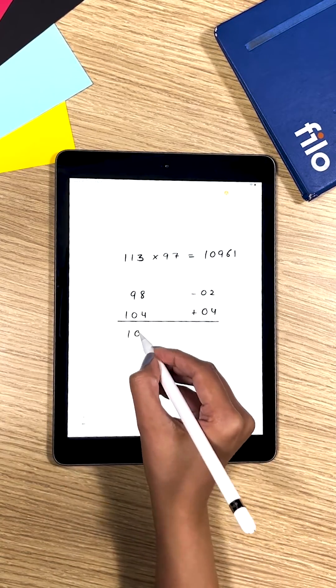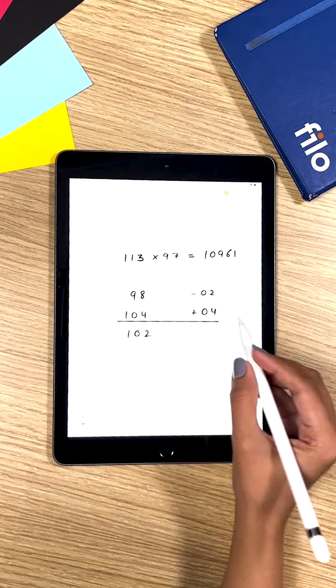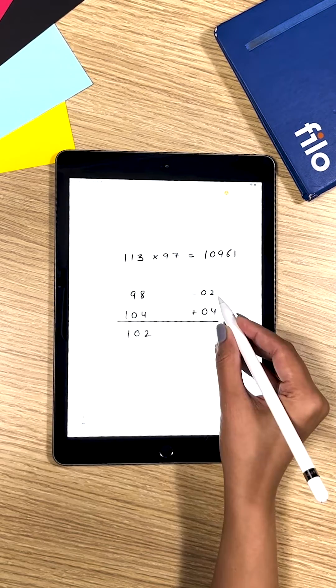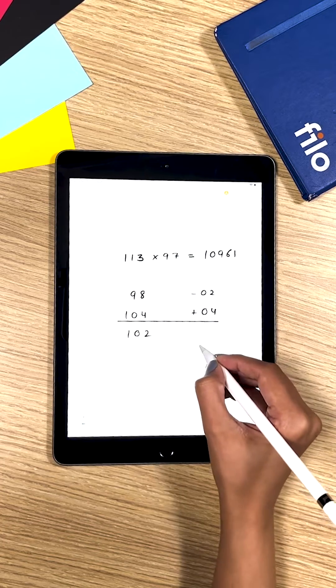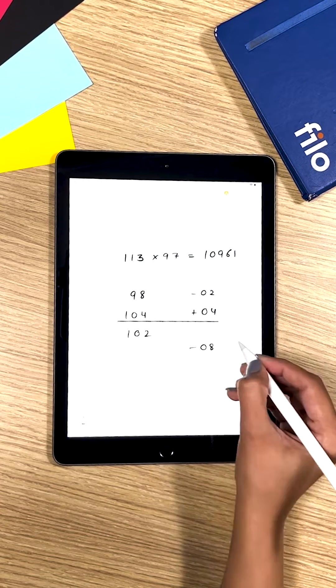You're going to end up having the first part same which is 102 and for the other part you multiply minus 2 with plus 04 and you will end up having minus 08.